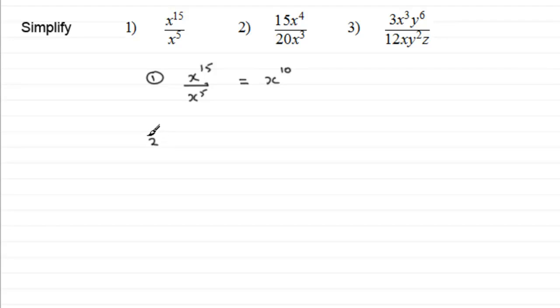Now in number two, we've got to simplify 15x to the power 4 all divided by 20x cubed or 20x to the power 3. Now with this one we can see that five divides into both the 15 and the 20. So fives into 15 goes three times and fives into 20 goes four times.